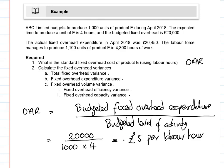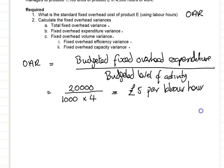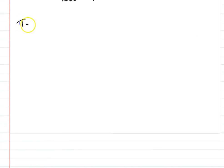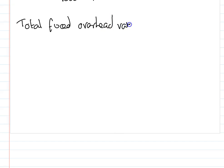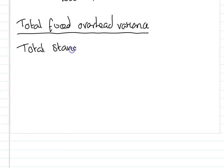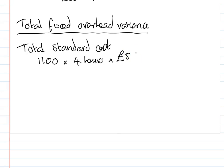Now we have the overhead absorption rate, we can calculate the other variances. First, I'm going to calculate my total fixed overhead variance. I take my total standard cost: 1,100 units multiplied by four hours at £5 per labour hour, and that gives me a total standard cost of £22,000.